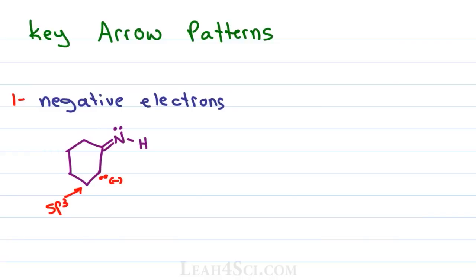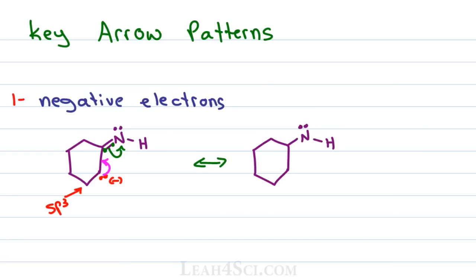Instead, I look for an sp2 hybridized carbon — one that has either a carbocation with an incomplete octet or a pi bond I can kick out. I want to move the electrons to form a pi bond between the negative carbon and the carbon double-bonded to nitrogen. In forming that pi bond, the carbon double-bonded to nitrogen will have too many electrons, but I can fix that by taking that pi bond and showing an arrow moving towards the nitrogen atom, collapsing those electrons onto nitrogen. Draw the double-headed arrows, redraw the skeleton, then look for what changed.